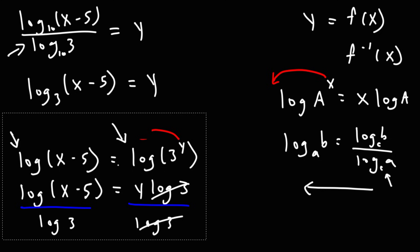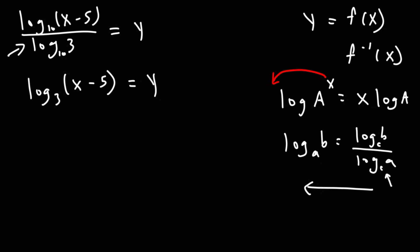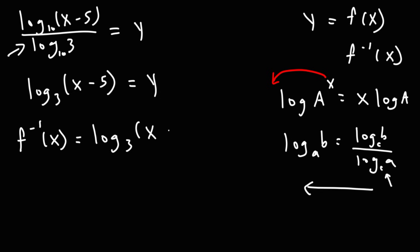The last thing we need to do is replace y with the inverse function symbol. So the inverse function is log base 3 of (x minus 5). As you can see, the inverse of an exponential function is a logarithmic function.